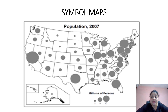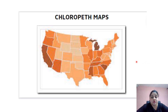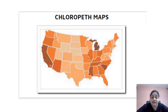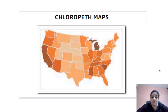Choropleth maps are similar to symbol maps. The difference is that in choropleth maps, we use colors — the more dense the color, the greater the quantity of a particular variable in that geographical location. Whereas symbol maps use symbols, choropleth maps use color-code coordination. The more densely colored area is more populated compared to lightly colored areas. These maps are also called filled maps.